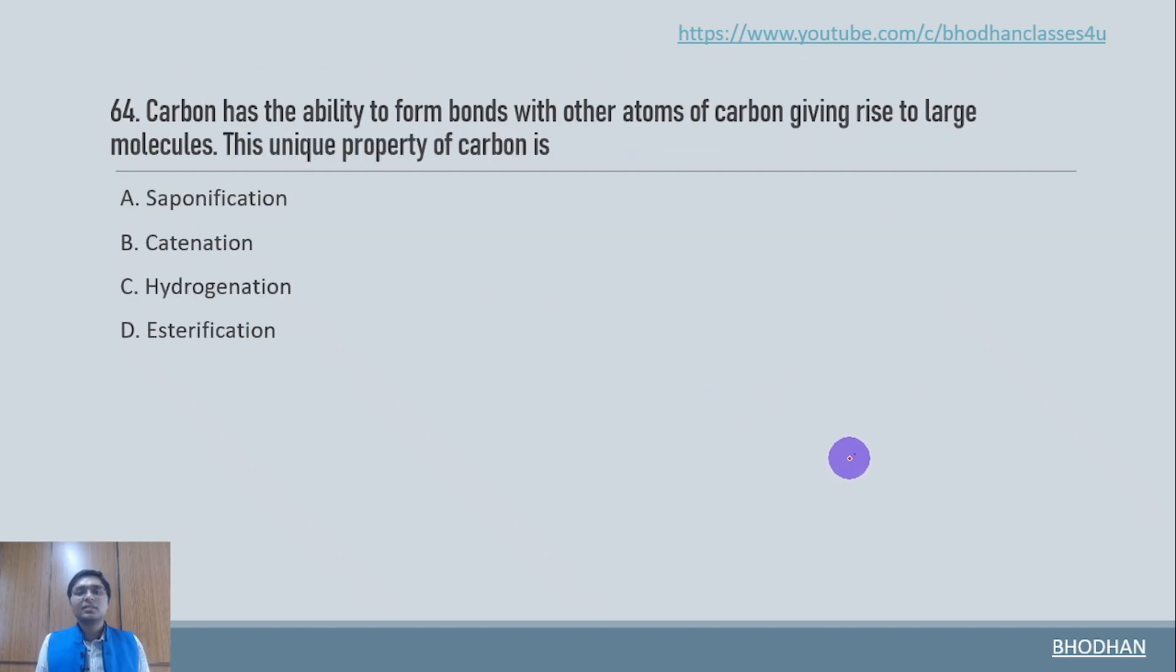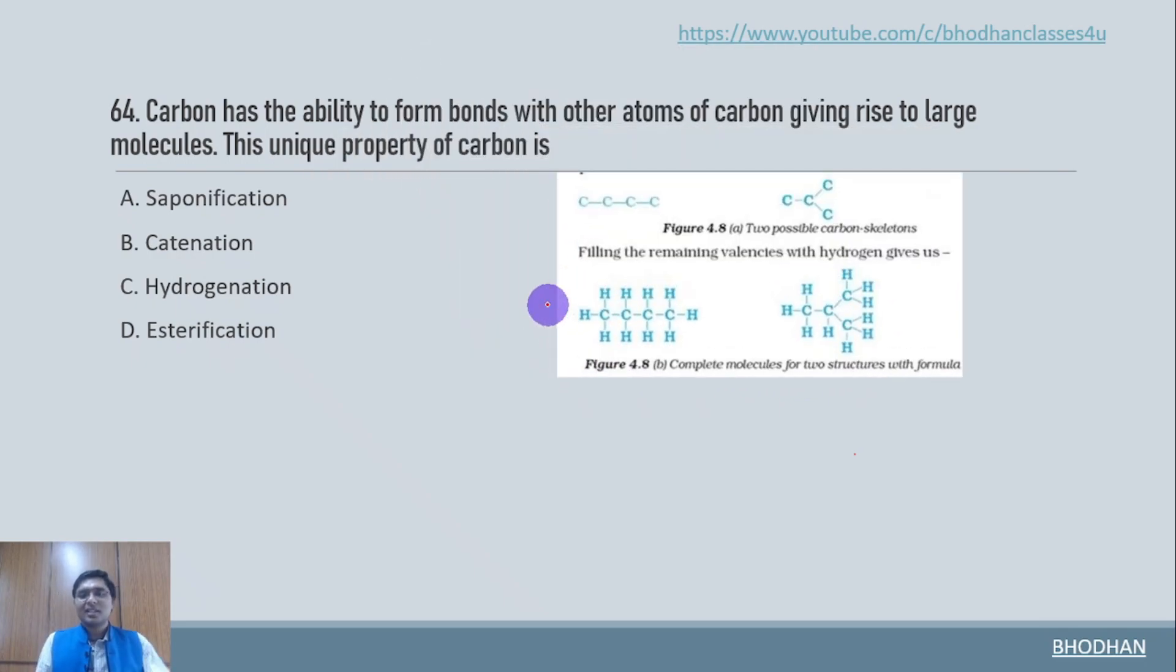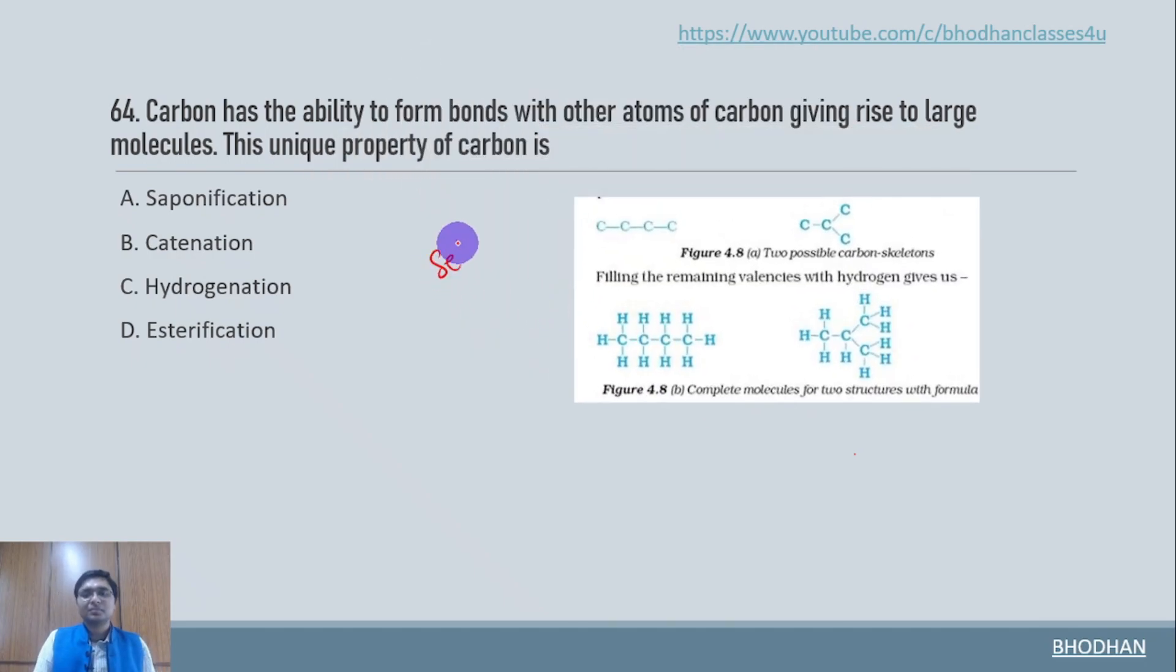Carbon has ability to form bonds with other atoms of carbon giving rise to large number of molecules. And this is the unique property that is catenation which is basically self linking.